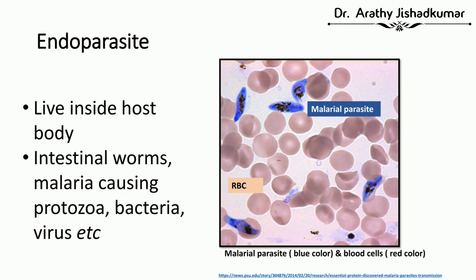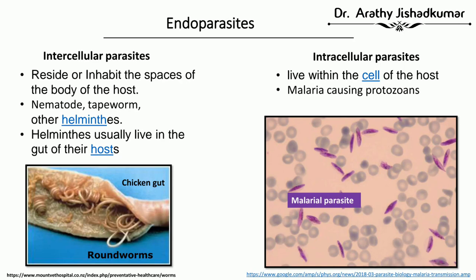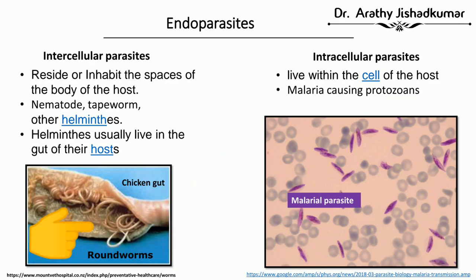Endoparasites themselves can be classified into two, depending on where exactly the parasite resides. One is intercellular parasite — they are not living inside the cell but in the spaces of the host body. For example, in this picture of a cut-open chicken gut, you can see roundworms in the gut space. Tapeworm, roundworm, and nematodes — all these belong to the helminthes family and are examples of intercellular parasites.